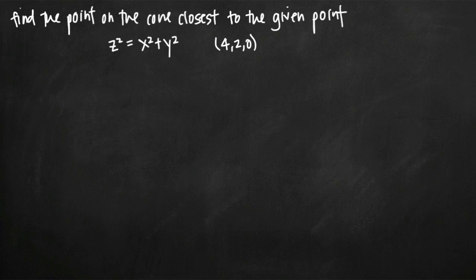Today we're going to be talking about how to find the point on the cone which is closest to the given point. In this particular problem, we've been given the equation of the cone, which is z² = x² + y², and a coordinate point (4, 2, 0).